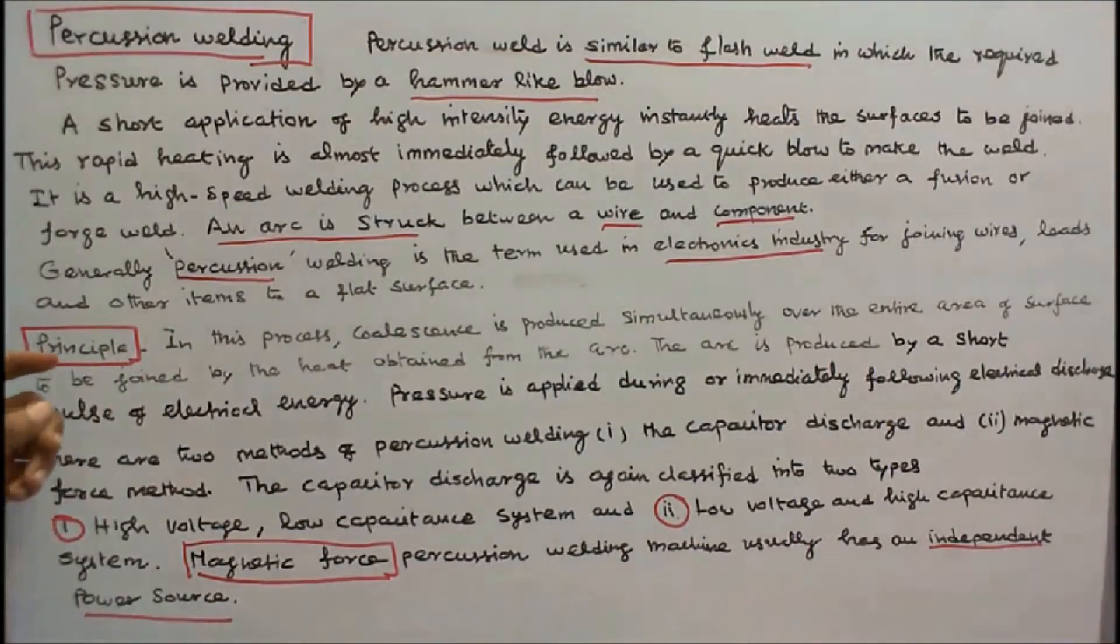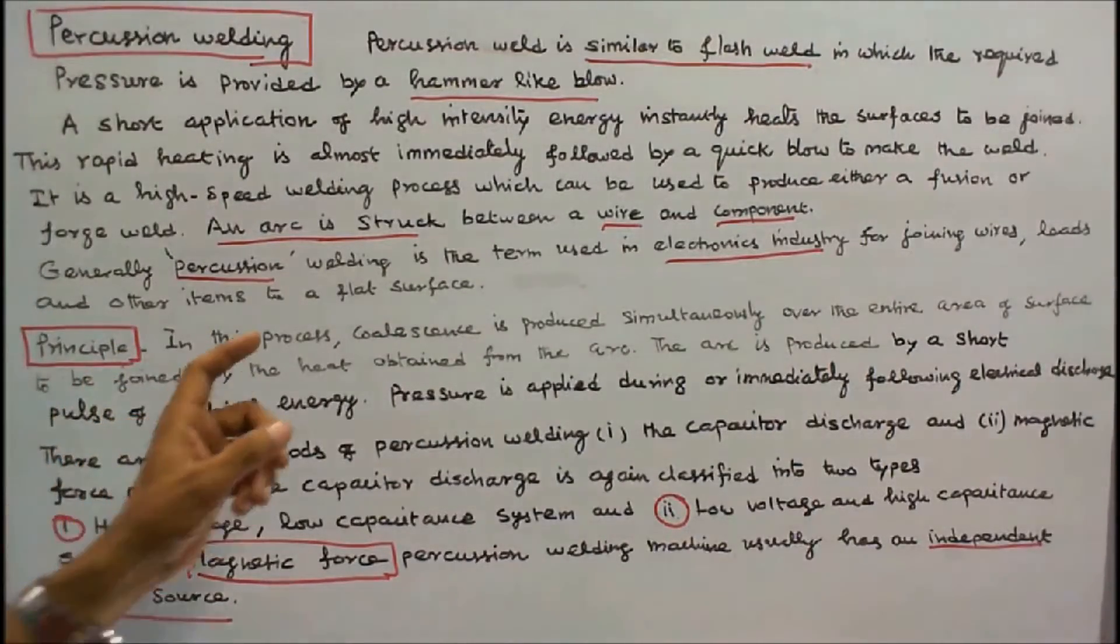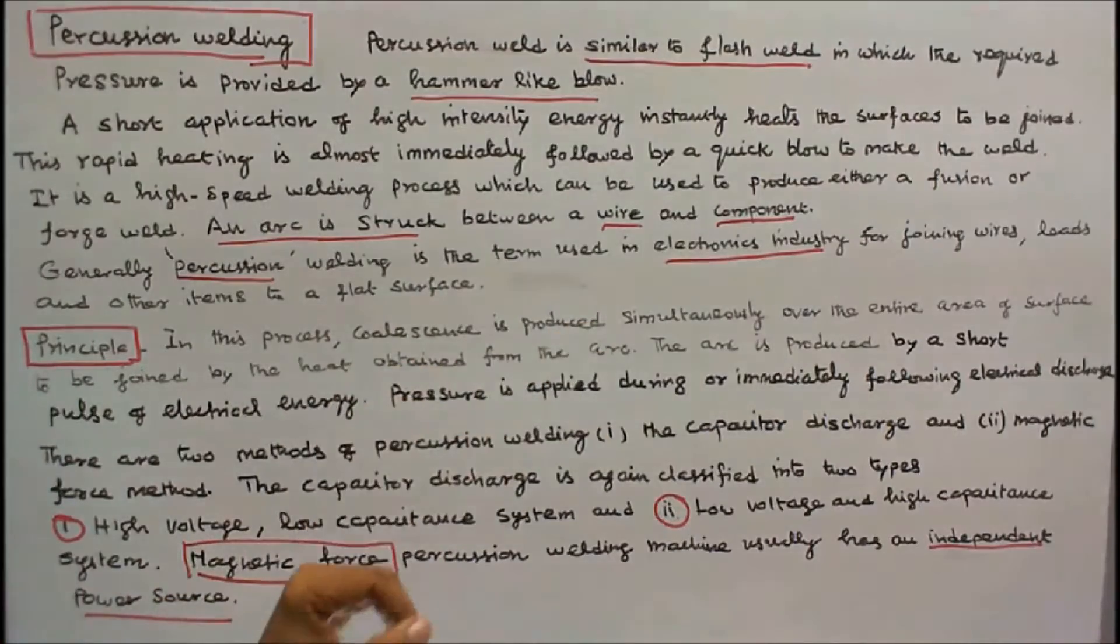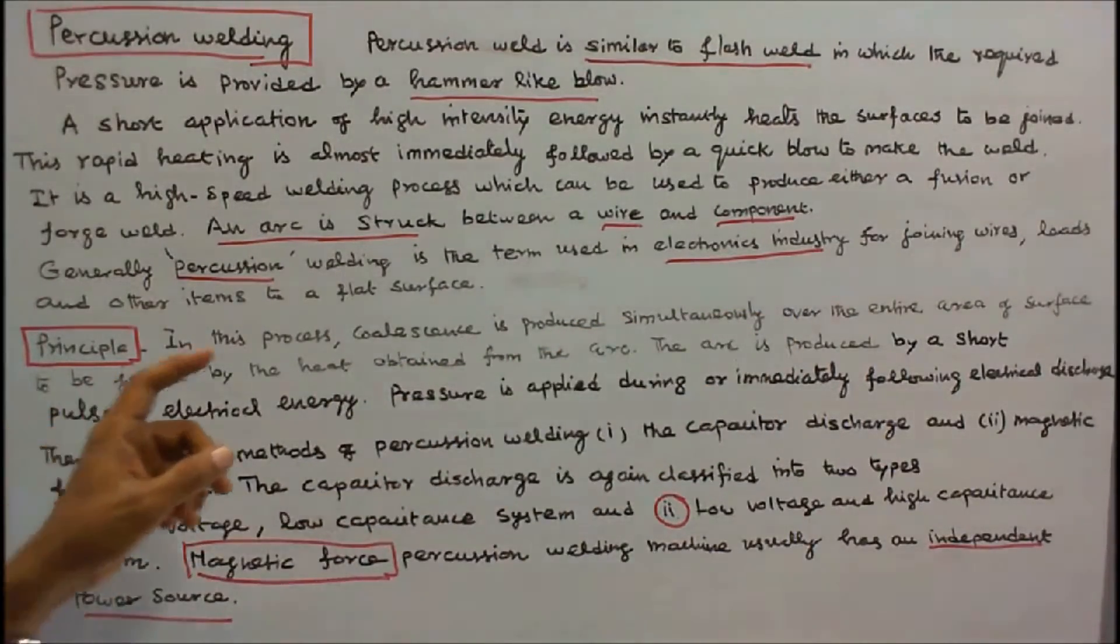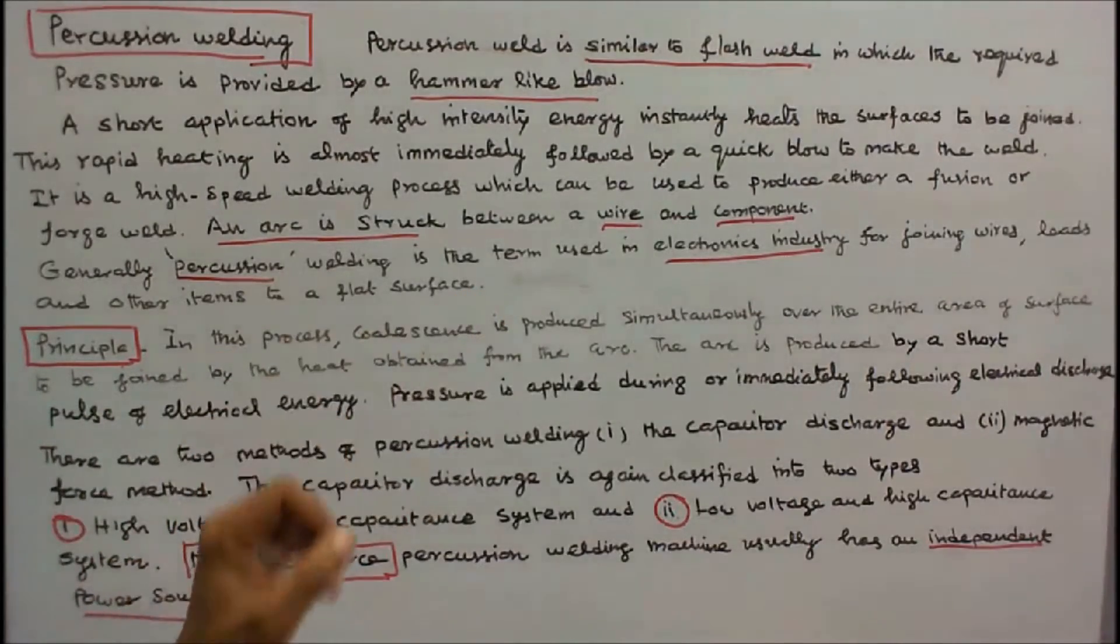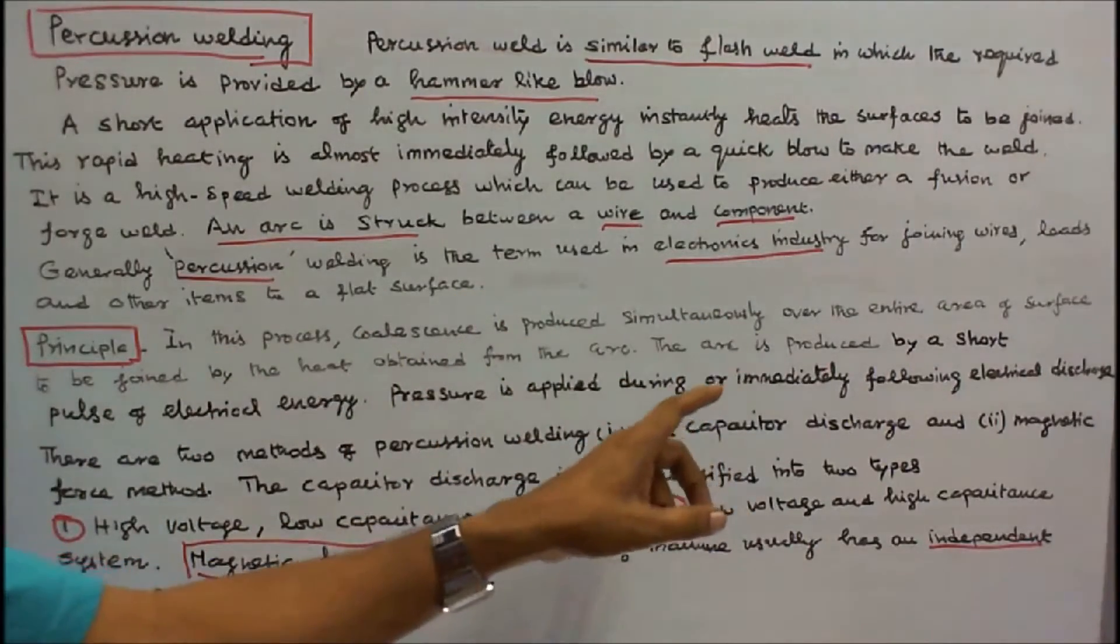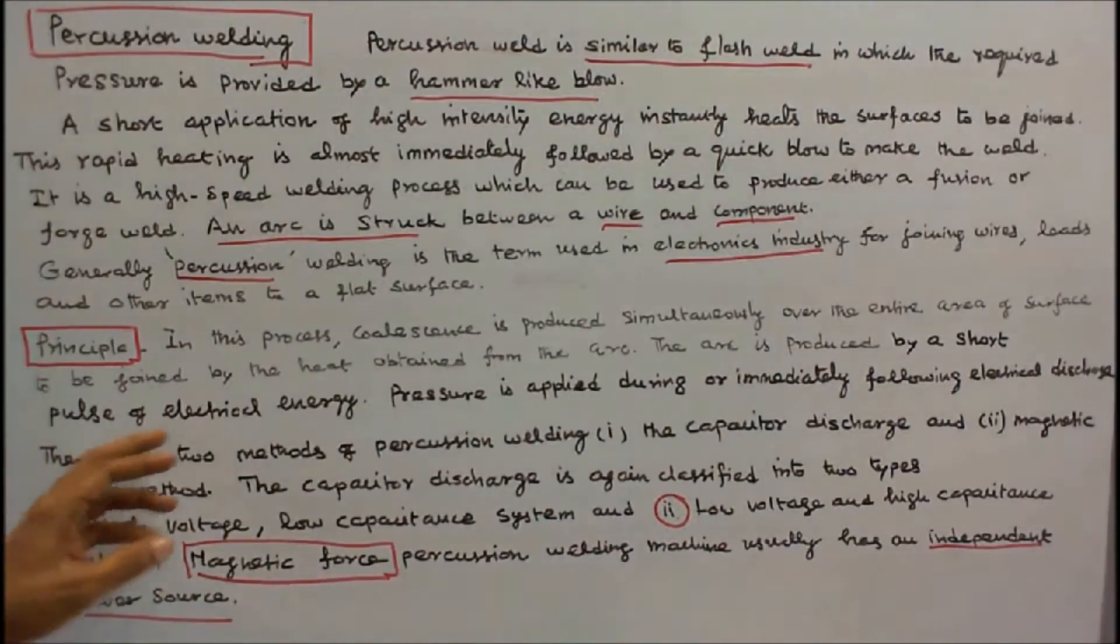The principle of Percussion Welding is: In this process, coalescence is produced simultaneously over the entire area of surface to be joined by the heat obtained from the arc. The arc is produced by a short pulse of electrical energy.